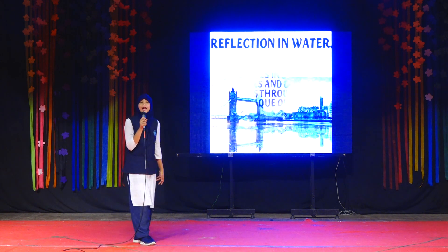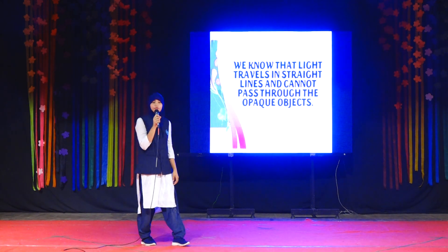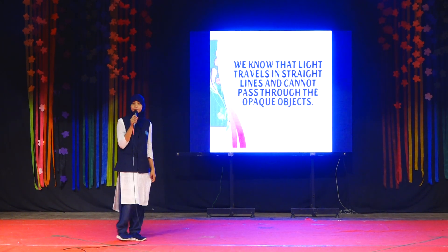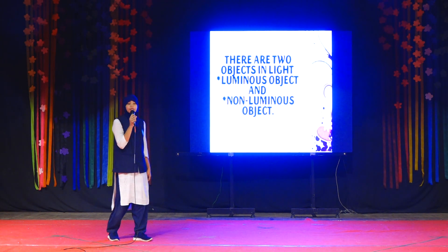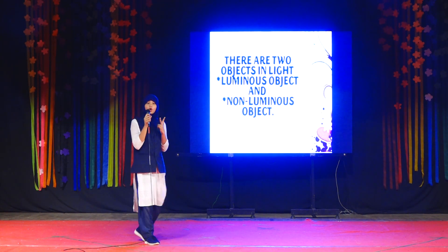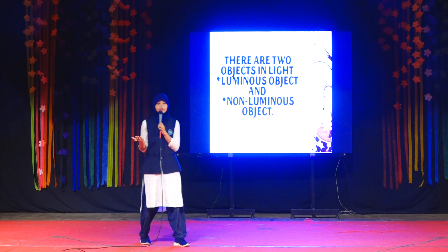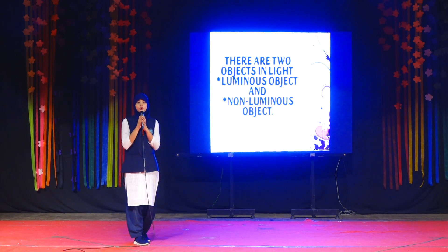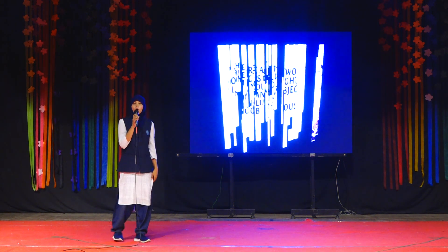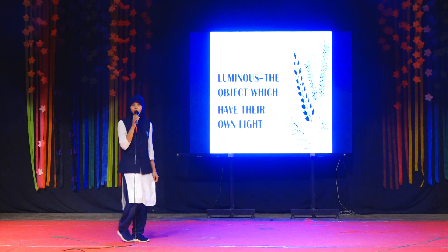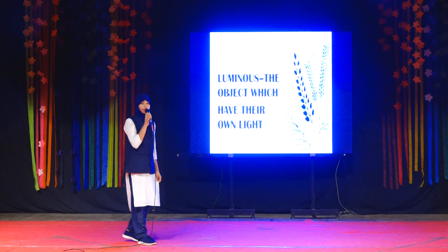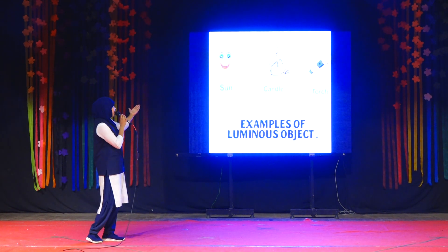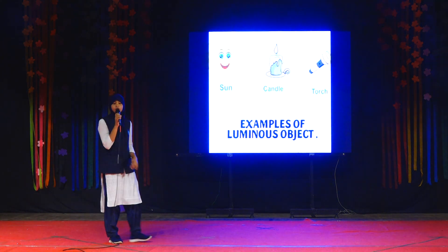We know that light travels in straight lines and cannot pass through opaque objects. So there are two types of objects in light: luminous objects and non-luminous objects. Luminous objects are those which have their own light. For example, the sun, candle, and torch.